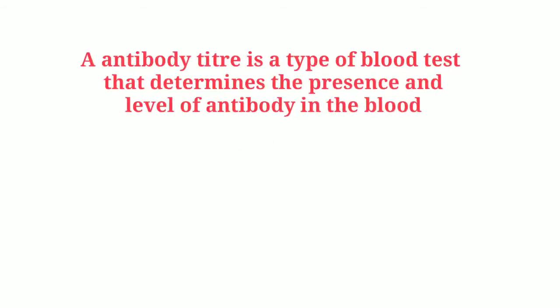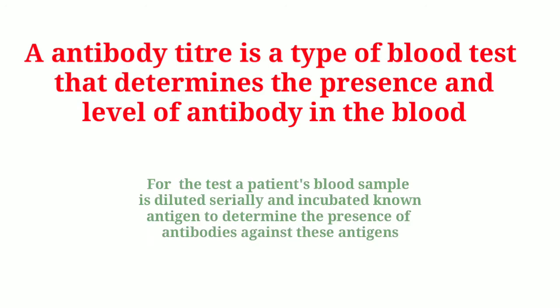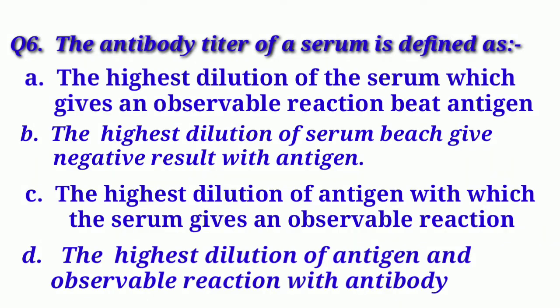An antibody titer is a type of blood test that determines the presence and level of antibody in the blood. For the test, a patient's blood sample is diluted serially and incubated with a known antigen to determine the presence of antibody against these antigens. So our correct option is Option A: The highest dilution of serum which gives an observable reaction with antigen.